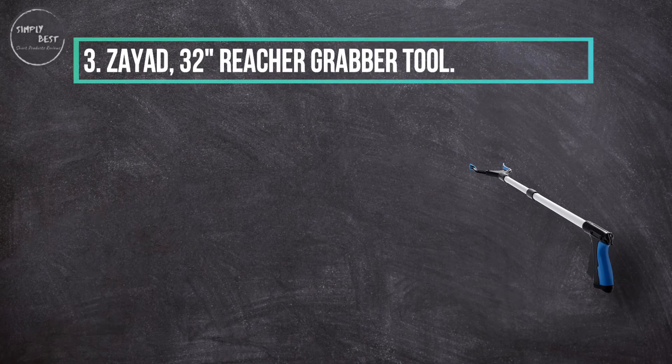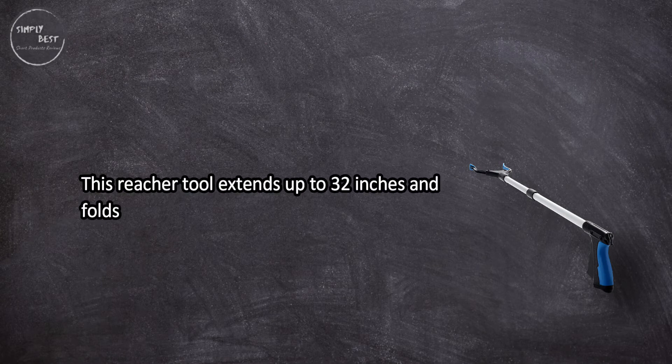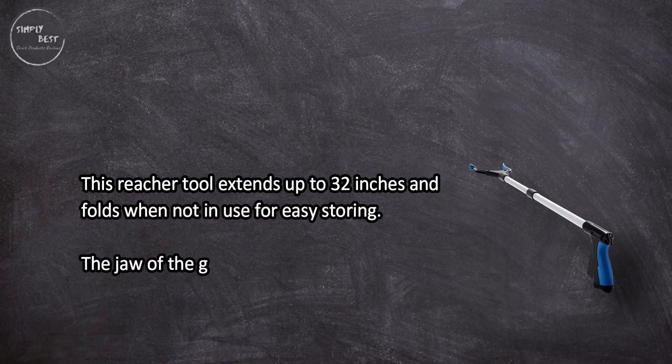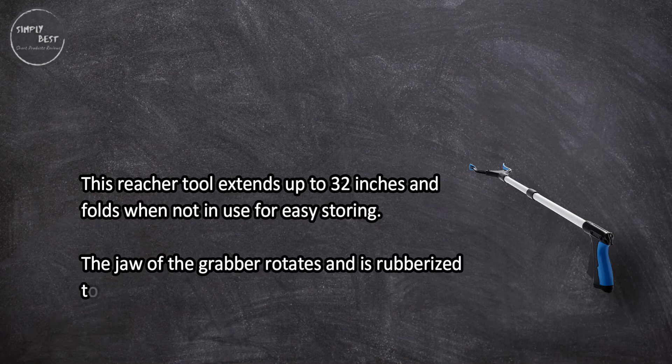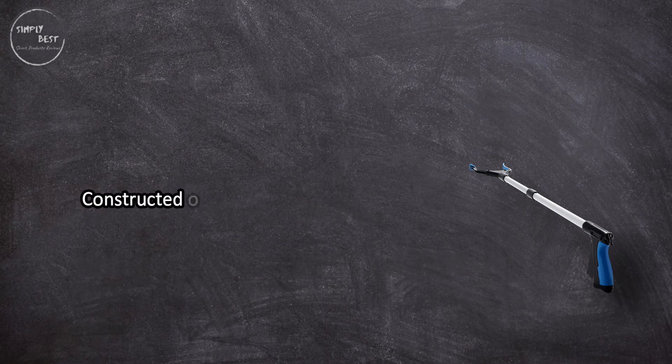At number three, Dyad 32 inch reacher grabber tool. This reacher tool extends up to 32 inches and folds when not in use for easy storing. The jaw of the grabber rotates and is rubberized to easily grab whatever is in reach.